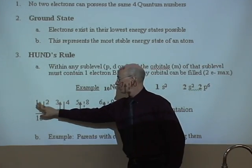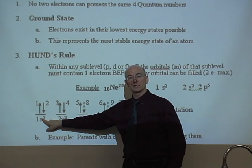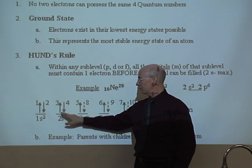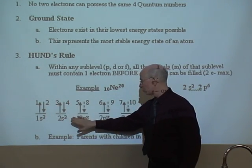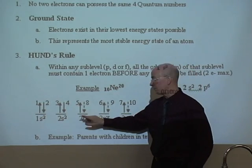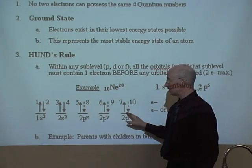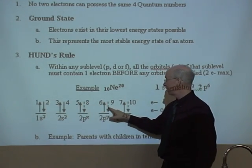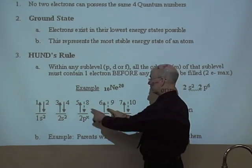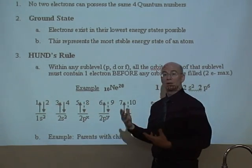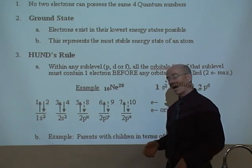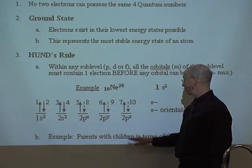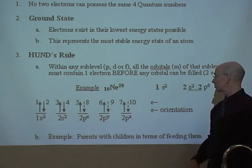Notice the order of the electrons. The first two went in the 1s sub-level and energy level. Then we go to energy level 2, beginning with the s sub-level — electrons 3 and 4 go in there. Once we get to the p sub-level of energy level 2, there are three possible orbitals, and the electrons go in order: 5, 6, 7, 8, 9, 10. If you remove the last three electrons, you'd have nitrogen; add one and you have oxygen; add another and you have fluorine; and then you have neon. This is called the electron configuration or electron orientation.